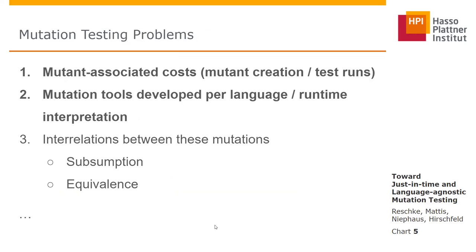Ahead-of-time mutation testing has problems that basically lead to mutation testing not being broadly used in practice. First, there are mutant-associated costs: VM ramp-up, mutant creation, recompiling the code, and test runs per mutation. Second, mutation tools are often developed per language or runtime-specific. Third, there are problematic interrelations between mutations — they are able to subsume themselves under equivalence. With our approach of just-in-time and language-agnostic mutation testing, we want to tackle the first two of these problems.